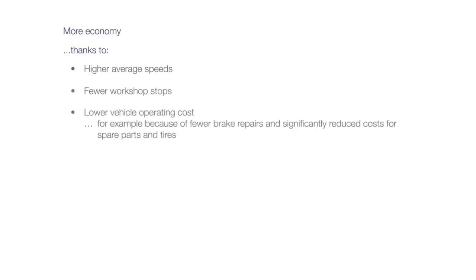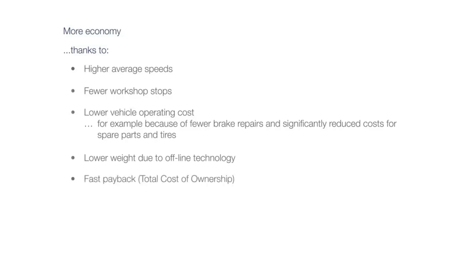More economy, thanks to higher average speeds, fewer workshop stops, lower vehicle operating costs — for example, because of fewer brake repairs and significantly reduced costs for spare parts and tires — lower weight due to offline technology, fast payback, total cost of ownership, and last but not least, advantages when the vehicle is sold on.